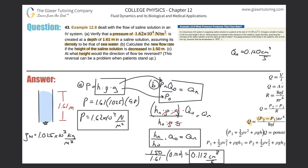Letter C says: at what height would the direction of flow be reversed? You have to think about the nature of what's going on. There's a tube being inserted into somebody's arm via a needle. In order for this IV solution to flow into the person's vein, it has to overcome a certain amount of pressure already inherent in the vein. If the pressure of the saline solution equals the pressure of the blood, then no flow happens.